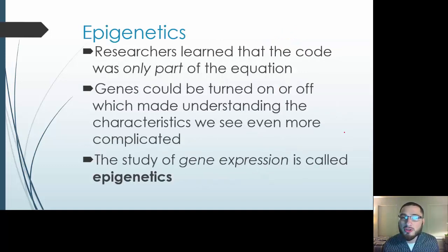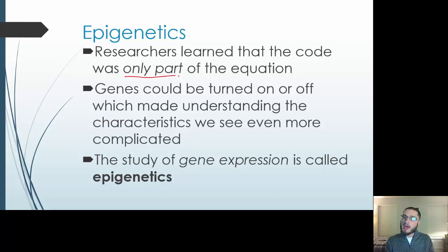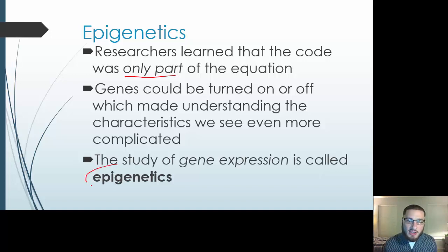But researchers ultimately learned that the code was only part of the equation. The genes could be turned on and turned off. So now it's not just a matter of whether you have a gene or not — it's whether the gene is turned on or turned off. This makes understanding characteristics even more complicated. The study of this gene expression is called epigenetics.